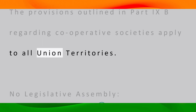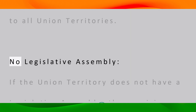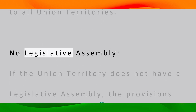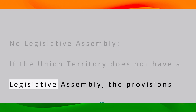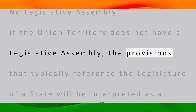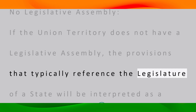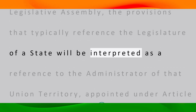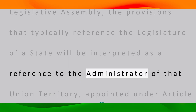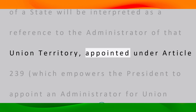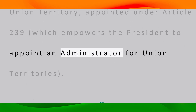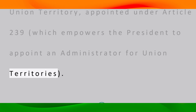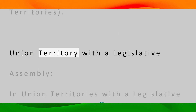The provisions outlined in Part 9B regarding cooperative societies apply to all union territories. If a union territory does not have a legislative assembly, the provisions that typically reference the legislature of a state will be interpreted as a reference to the administrator of that union territory, appointed under Article 239, which empowers the president to appoint an administrator for union territories.